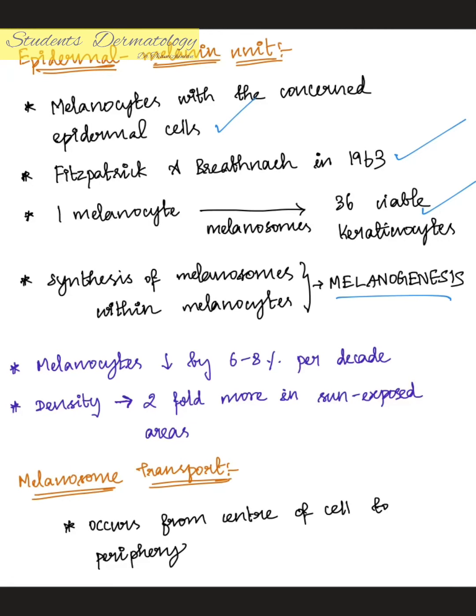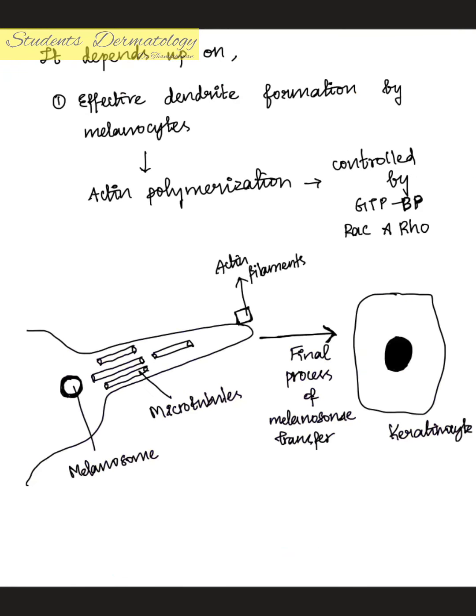Melanocytes decrease by an average of 6 to 8 percent per decade, and their density is two-fold more in sun-exposed areas. Melanosome transport always occurs from the center of the cell to the periphery.